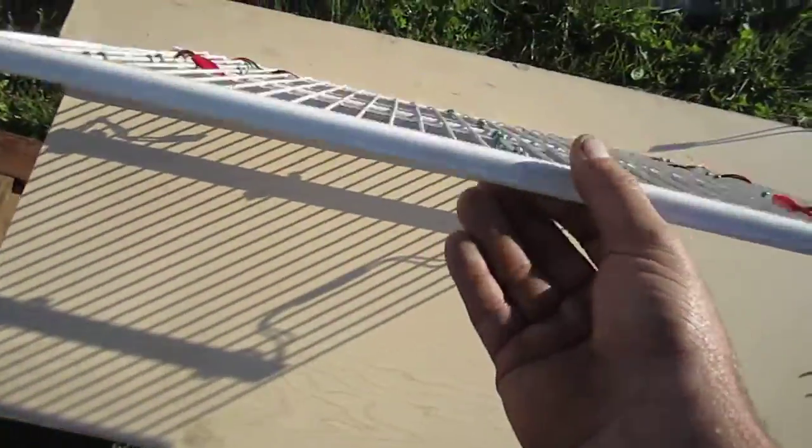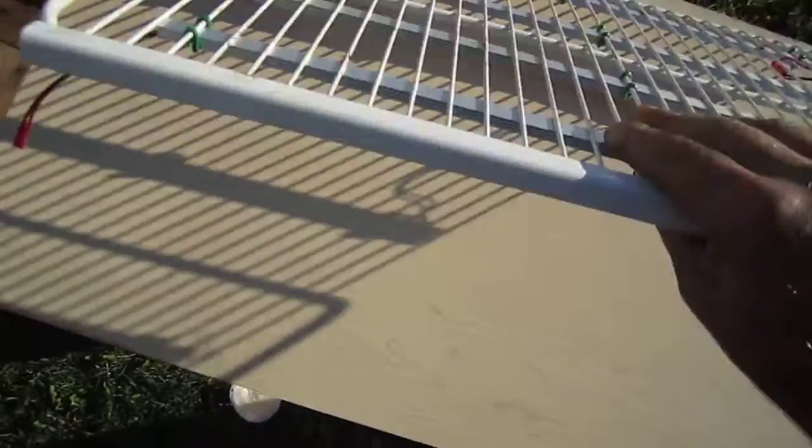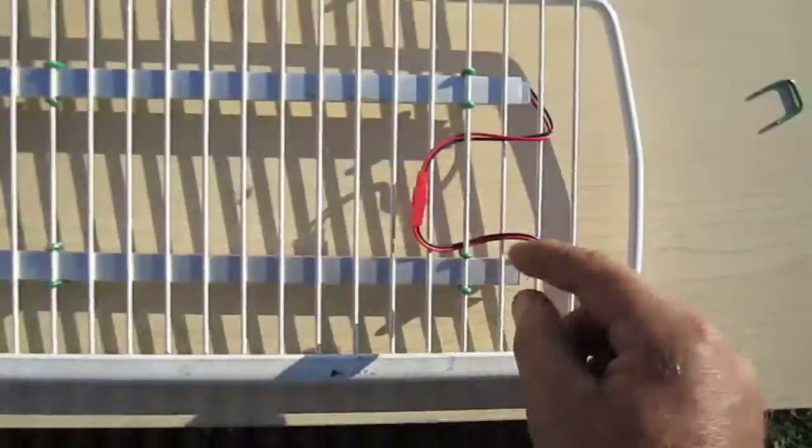On the underside of the shelf itself worked out really nice for these lights. You can see I've got four of them mounted on this shelf. The beauty of these lights is that they all tie together. You can see here they all plug in together.